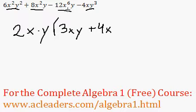The negative 12x to the 6y—12 divided by 2, actually negative 12 divided by 2 is negative 6. x to the 6 divided by x is just x to the 5, and the y's cancel out again.